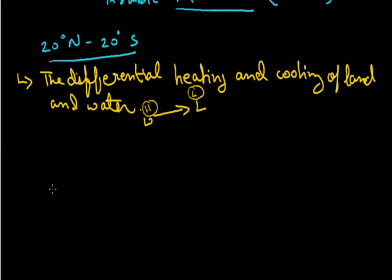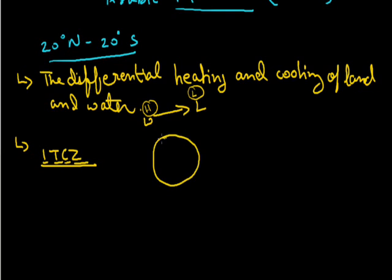The second important fact is the shift of the ITCZ — the Inter-Tropical Convergence Zone. This is a zone on Earth near the equator, roughly between 5 degrees north and 5 degrees south. It is also known as the monsoon trough during the monsoon season, and this is another important factor affecting the monsoons.